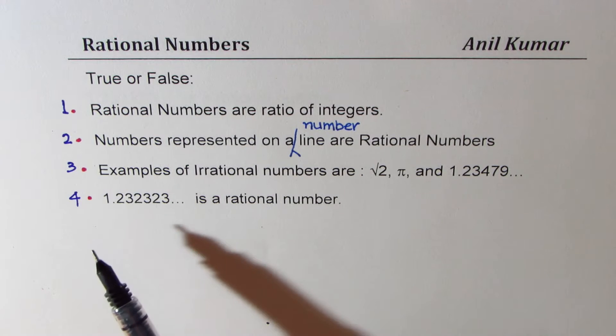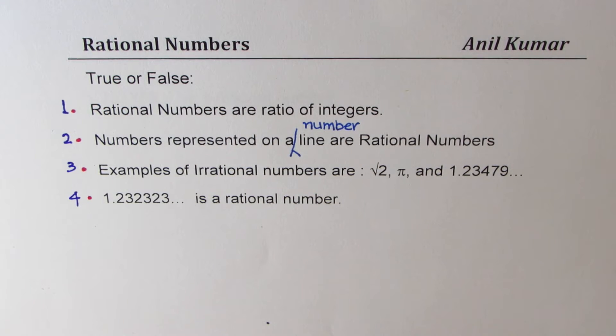So you need to answer these four questions whether they are true or false. Question 1: Rational numbers are ratio of integers, true or false.